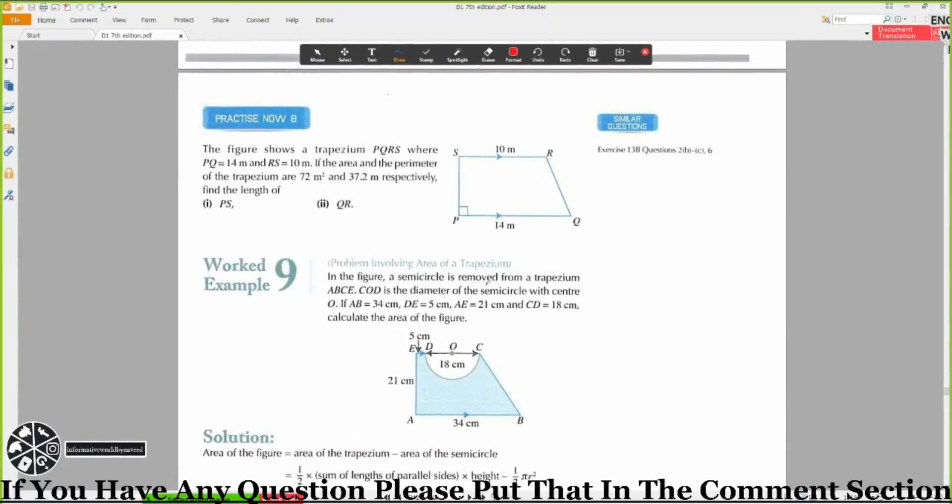In the figure, a semicircle is removed from a trapezium ABCE. COD is the diameter of the semicircle with center O. If AB is equal to 34, DE is equal to 5 centimeters, AE is equal to 21 centimeters, and CD is equal to 18 centimeters, calculate the area of the figure. We need to find the area of the shaded region.